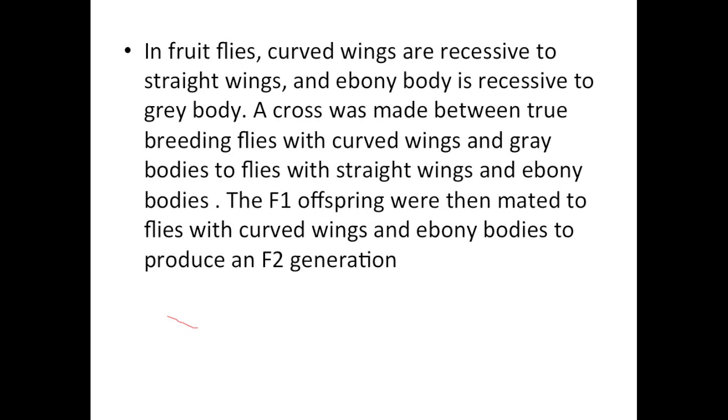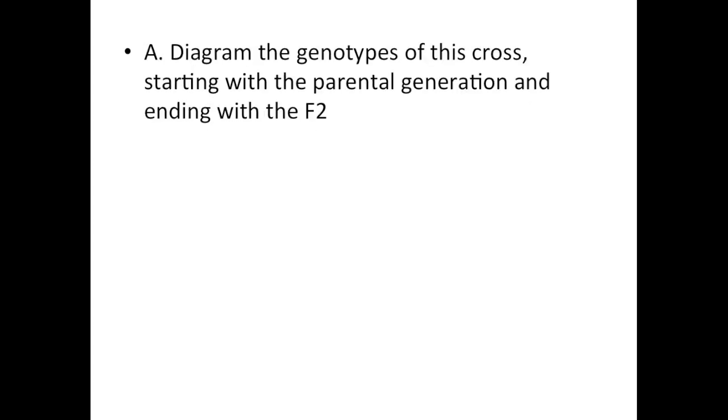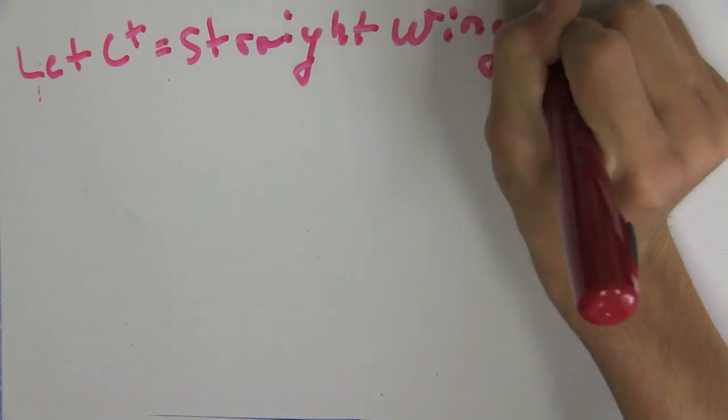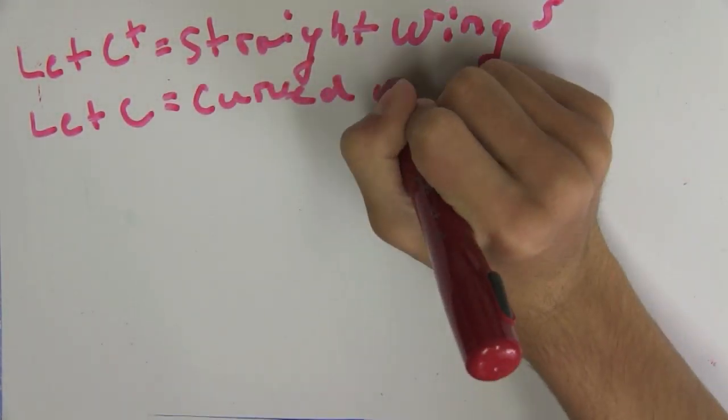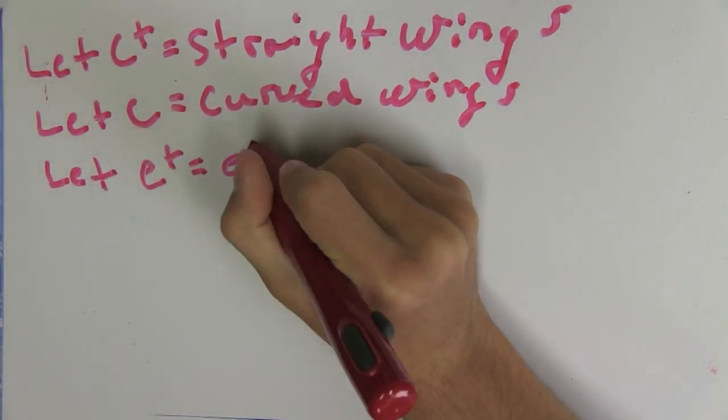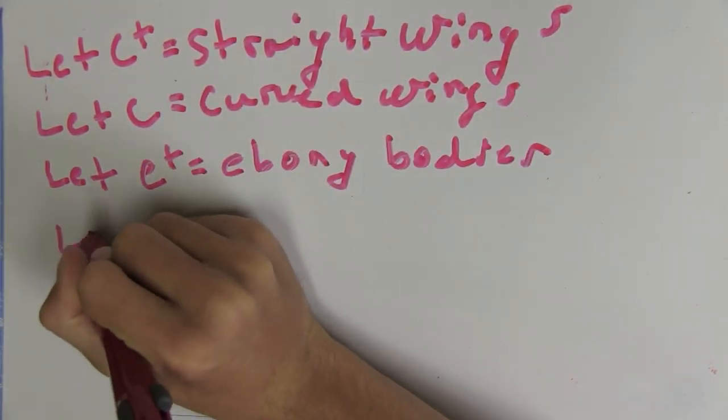Let's look at part A of this problem. Part A is asking to diagram the genotypes of this cross, starting with the parental generation and ending with the F2 generation. So the first thing I like to do is to set up my notation. Right now I'm setting up notation for what I'm representing the genotypes for curved wings and so on and so forth.